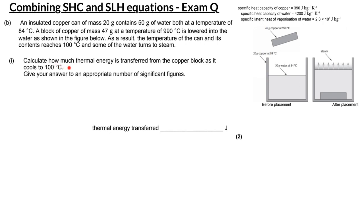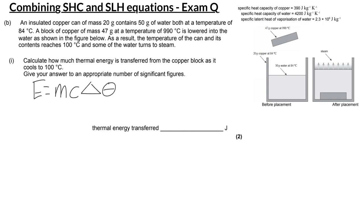For the first part of the question we have to calculate how much thermal energy gets transferred from the copper block to the water and the other bit of copper as it cools down to 100 degrees. Because this is all about changing temperature — the temperature change of the block of copper from 990 to 100 — we're using the specific heat capacity equation: E = mcΔθ, where m is mass, c is specific heat capacity, and Δθ is the change in temperature.